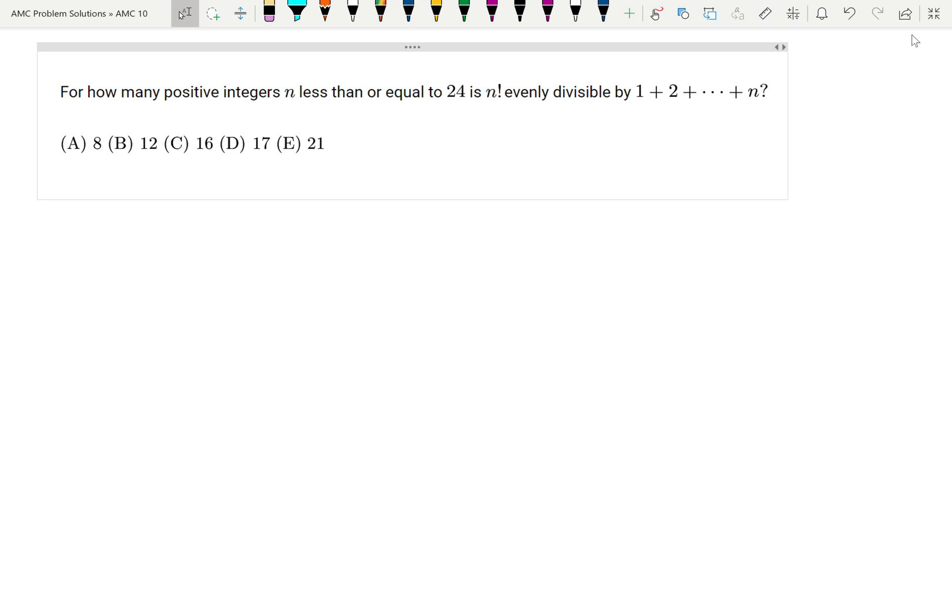For how many positive integers n less than or equal to 24 is n factorial evenly divisible by 1 plus 2 all the way to n?